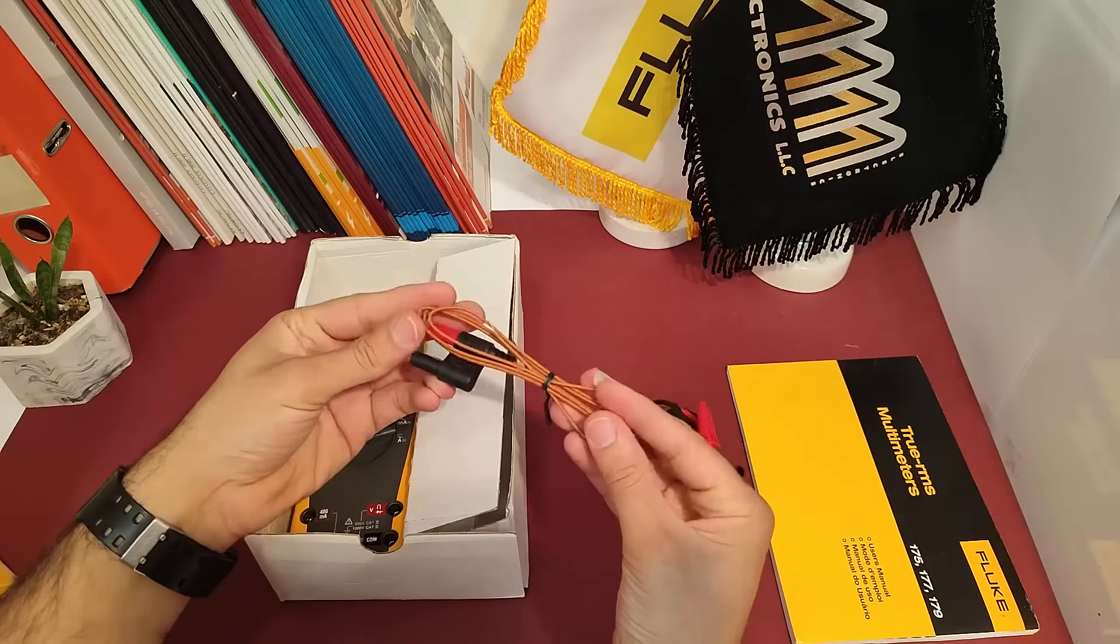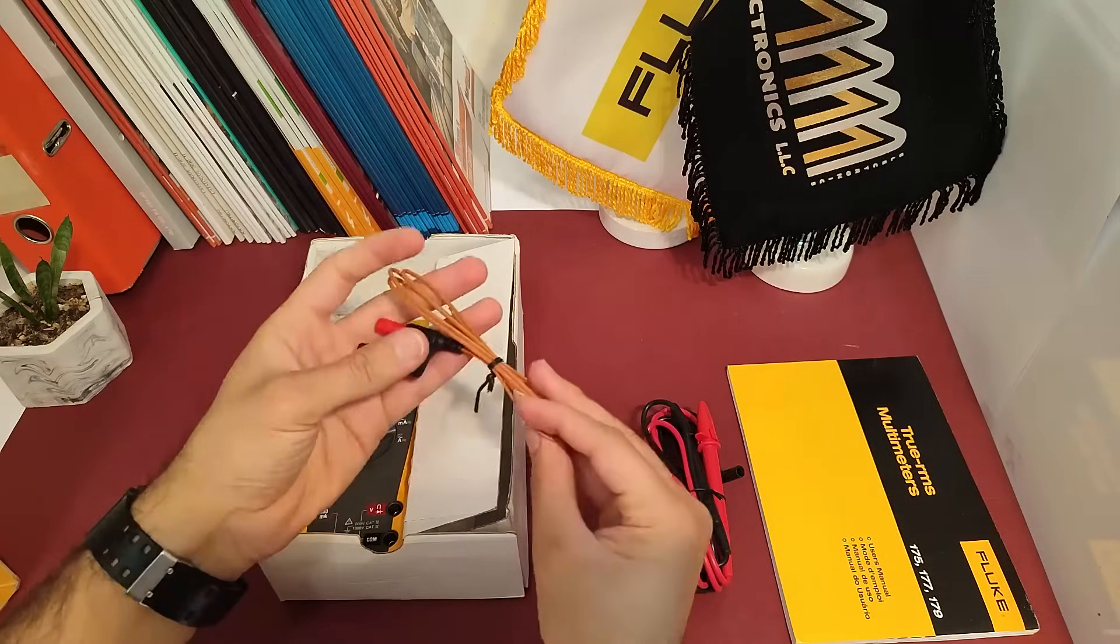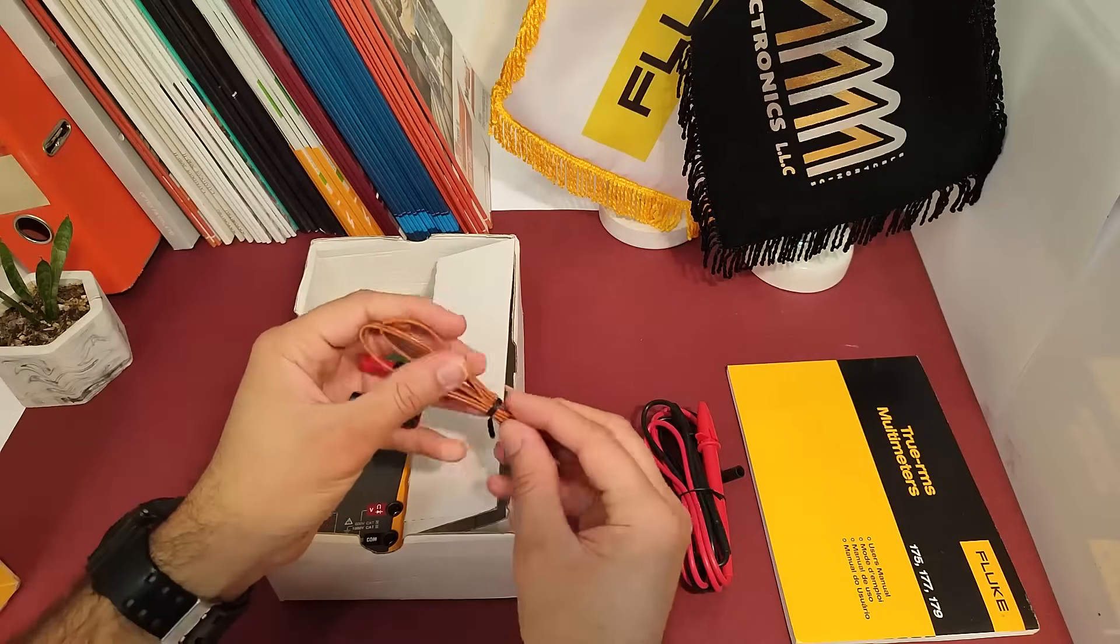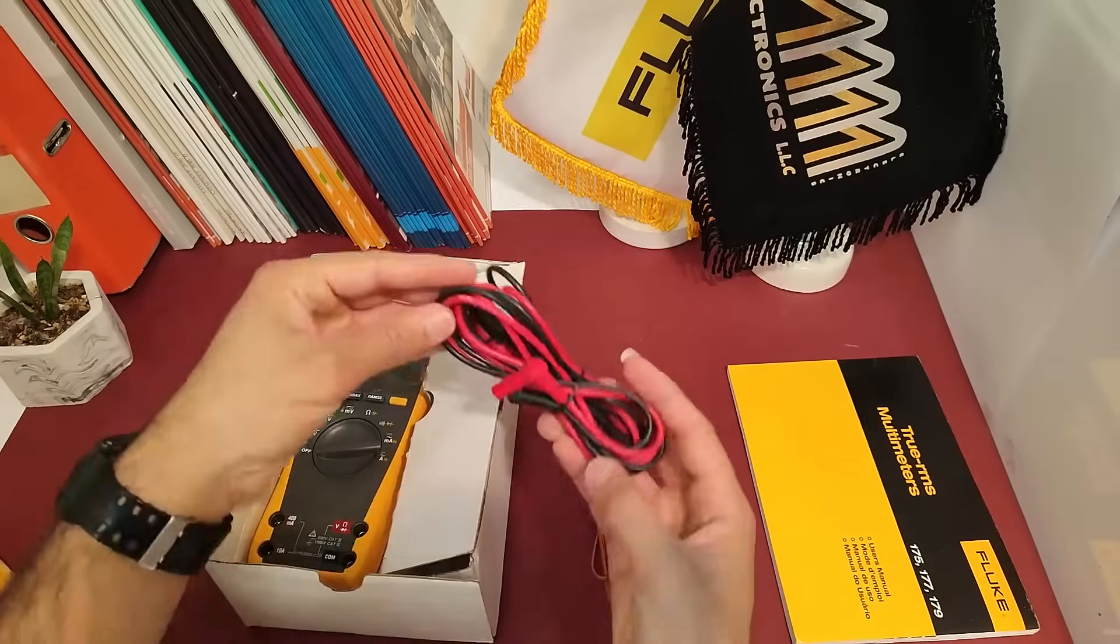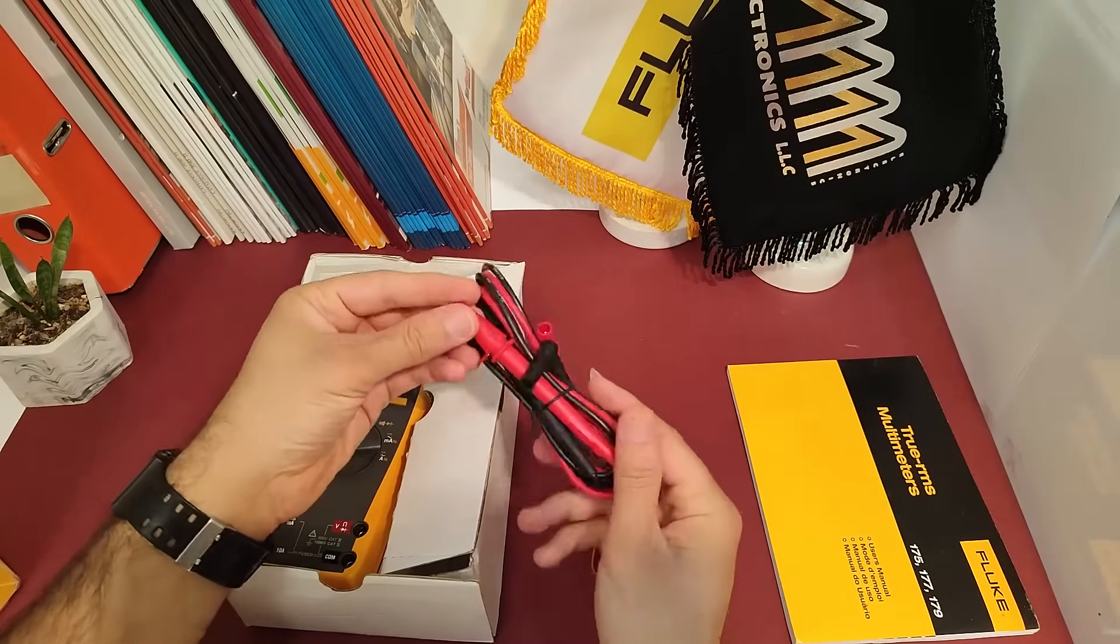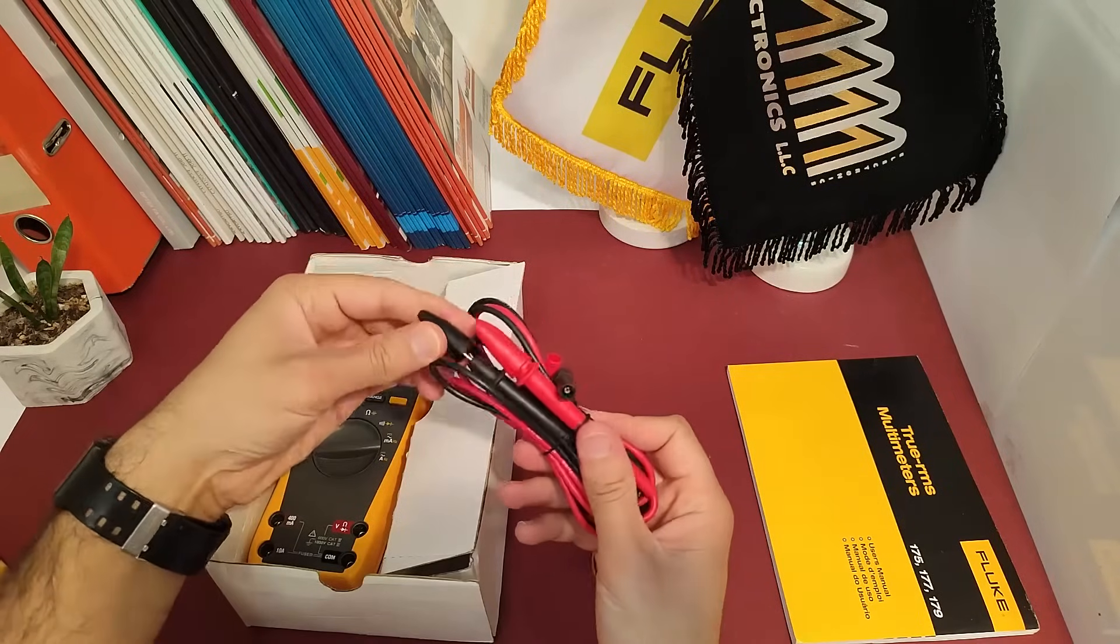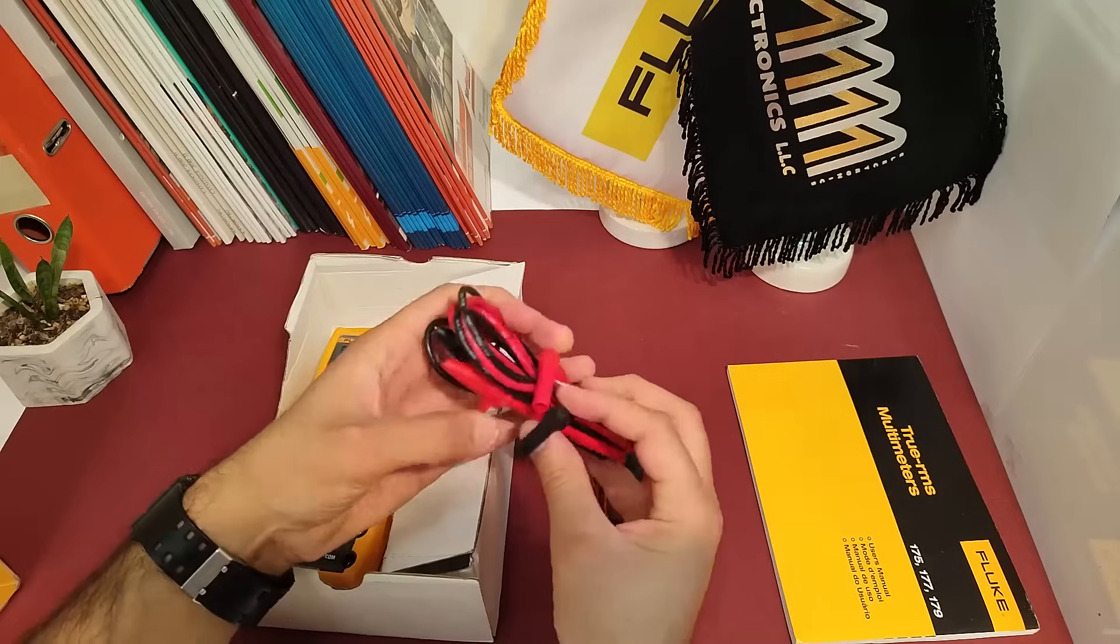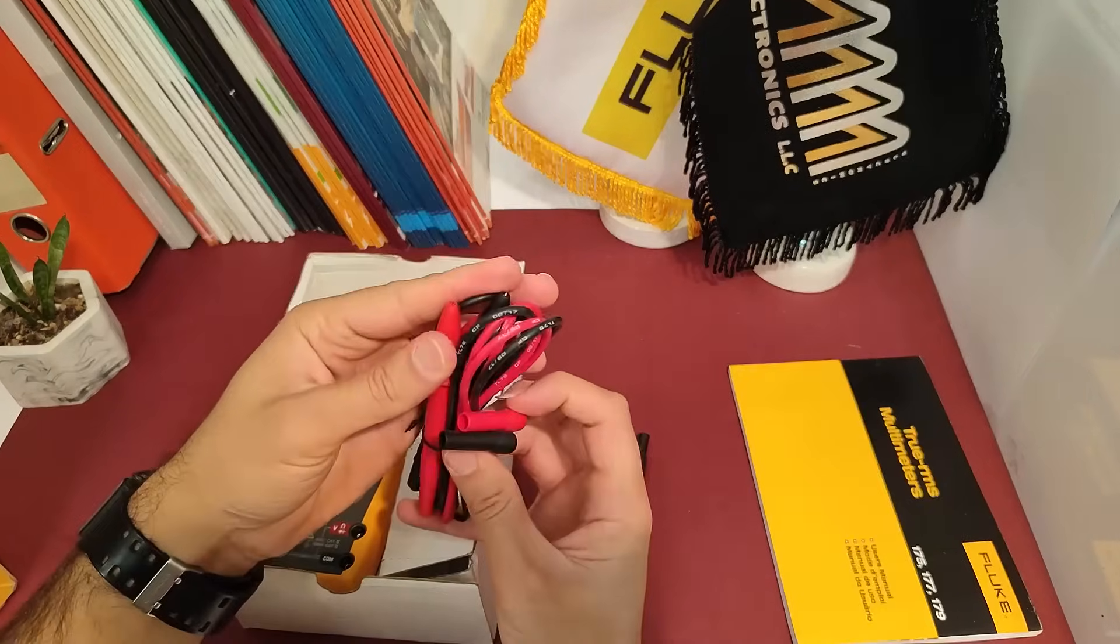The temperature probe is an essential accessory for anyone who wants to measure the temperature of electrical components. It's easy to use and comes with the FLOG 179 multimeter. The multimeter comes with a variety of other lids that can be used to measure different types of electrical components. These lids are of excellent quality and feel sturdy.